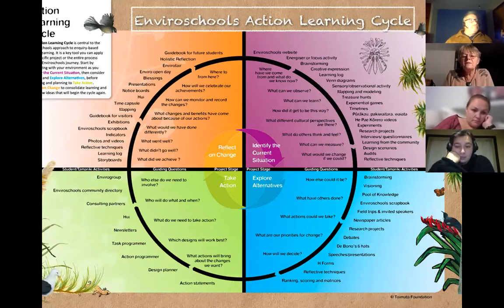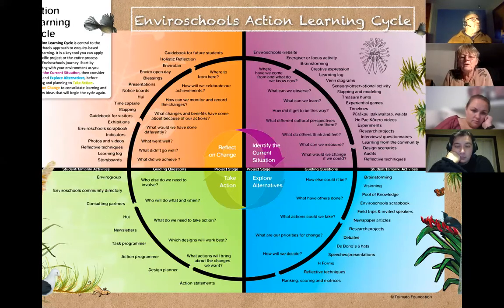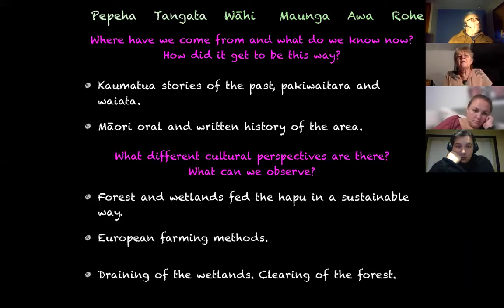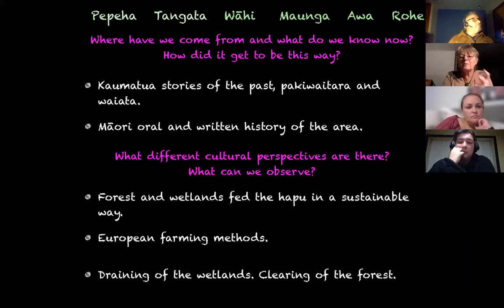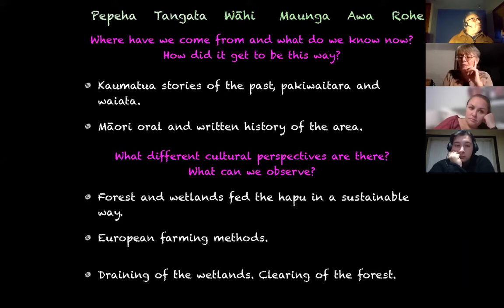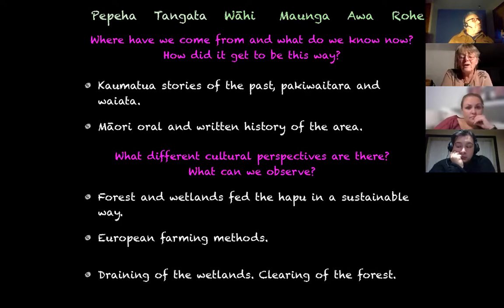We looked at the action learning cycle in four quarters: identifying the current situation, exploring where we wanted to go and what alternatives there were, what action we might take, and reflecting on change. We came up with key words with our whānau community. We wanted to start with our pepeha — who are the tangata we belong to, what is the place we belong, our maunga, our awa, and our rohe.